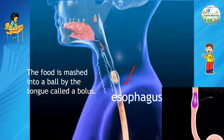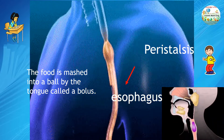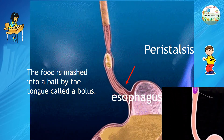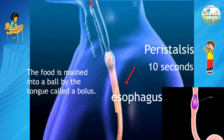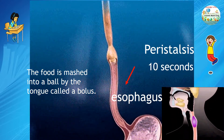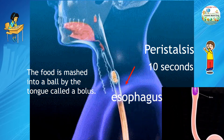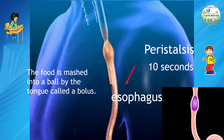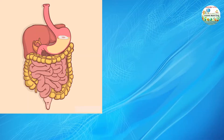The esophagus contracts in a wave-like motion called peristalsis, pushing the food down to the stomach. The food remains in the esophagus for only about 10 seconds. You can even swallow upside down because of peristalsis. Peristalsis also occurs in the stomach and farther down the digestive system, and these waves keep food moving in one direction.